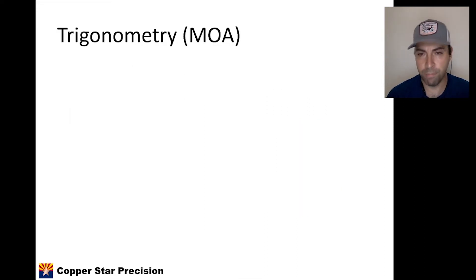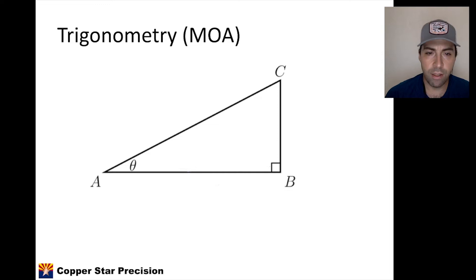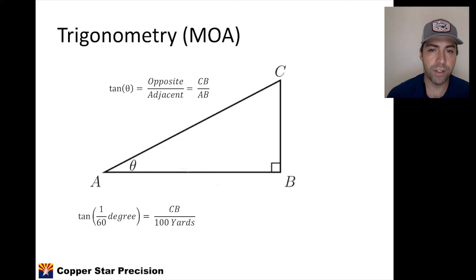Now, everyone's most feared subject, trigonometry. It's not that bad. We have a right triangle ABC with an angle A that we denote theta. That's the Greek symbol for theta, usually used to denote angles. And if we remember from geometry class, tangent of theta is the length of the opposite side over the adjacent side. In this case, the length CB over AB. So if we take the tangent of that angle, and we set that angle to be 1 MOA, or 1/60th of a degree, we get the length CB over, let's just say, a distance called 100 yards.